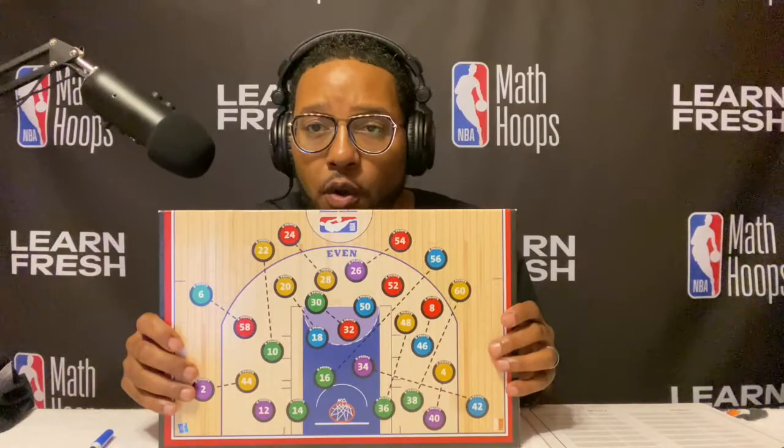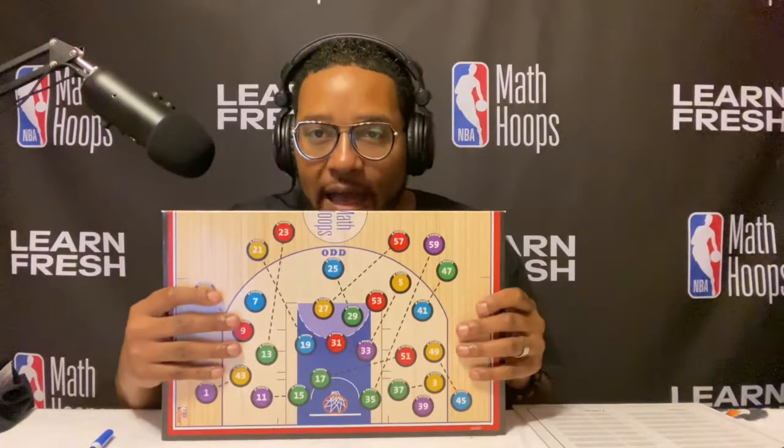Now I want to show you how to actually start the game. You're going to start the game the same way as the regular Math Hoops basic game — with the jump ball. Each team rolls one die. I just rolled two of the same numbers, so I'm going to do it again. I got an eight and a five. The eight is going to start first on the even side of the court, because the court is broken up into even and odd sides.